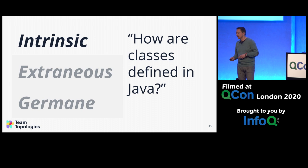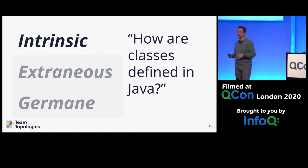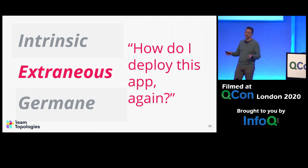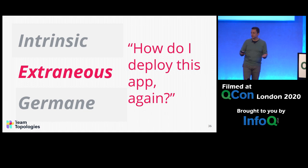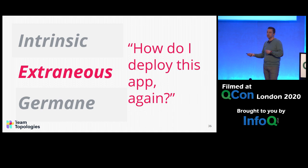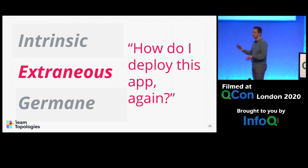The first type is intrinsic cognitive load. For example, if I'm a Java developer, I need to know how to write classes in Java. If I don't know that, then this is taking some effort on my memory — I have to Google it or try to remember.